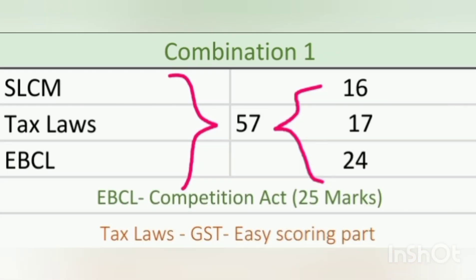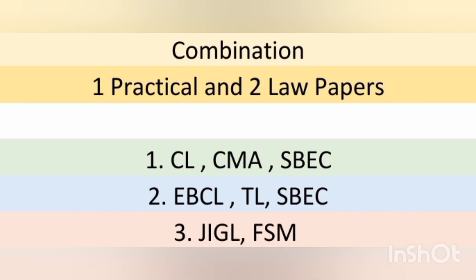The second combination includes SLCM, Tax Laws, and EBCL. EBCL and SLCM have some scoring parts — for example, in EBCL we have the Competition Act, which covers 25 marks in the examination. In SLCM, part two comprises 30 marks, and there are two chapters in SLCM part two. In Tax Laws, GST is one of the easy scoring parts. In the third combination I have included the remaining two subjects, JIGL and FSM, along with revision days for CMA and Tax Law sums.